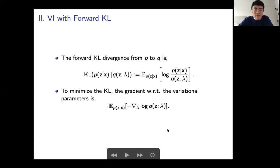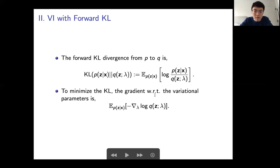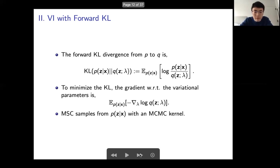VI with forward KL uses the same framework but changes the objective to the forward KL divergence. To minimize this objective, the gradient with respect to the variational parameters involves an expectation over the true posterior P. The key challenge is evaluating or sampling from this expectation over P, since P is what we don't yet know. Markovian Score Climbing samples from this using an MCMC kernel.